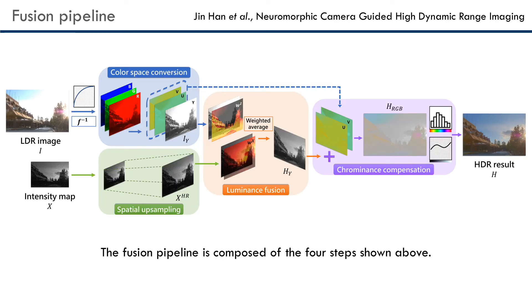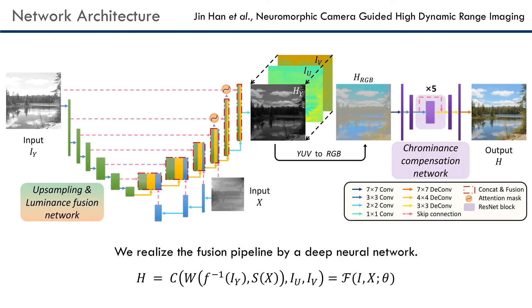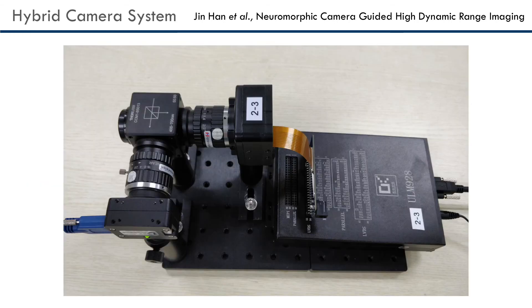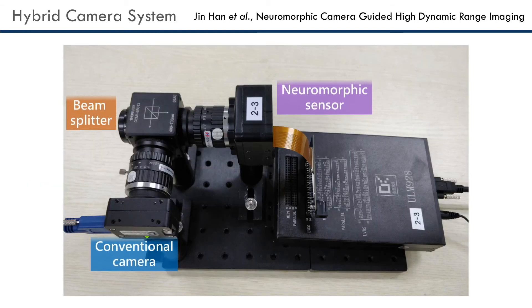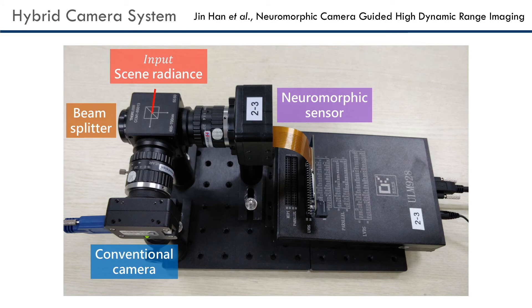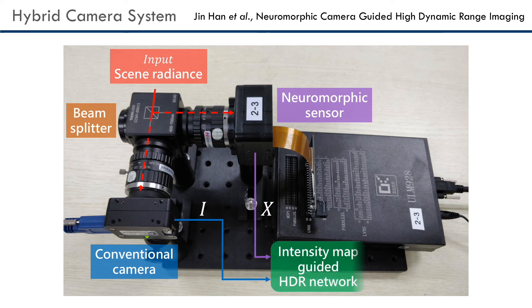The fusion pipeline is composed of the four steps shown above, and we realize the fusion pipeline using a deep neural network. We also build a hybrid camera system to capture real world data.